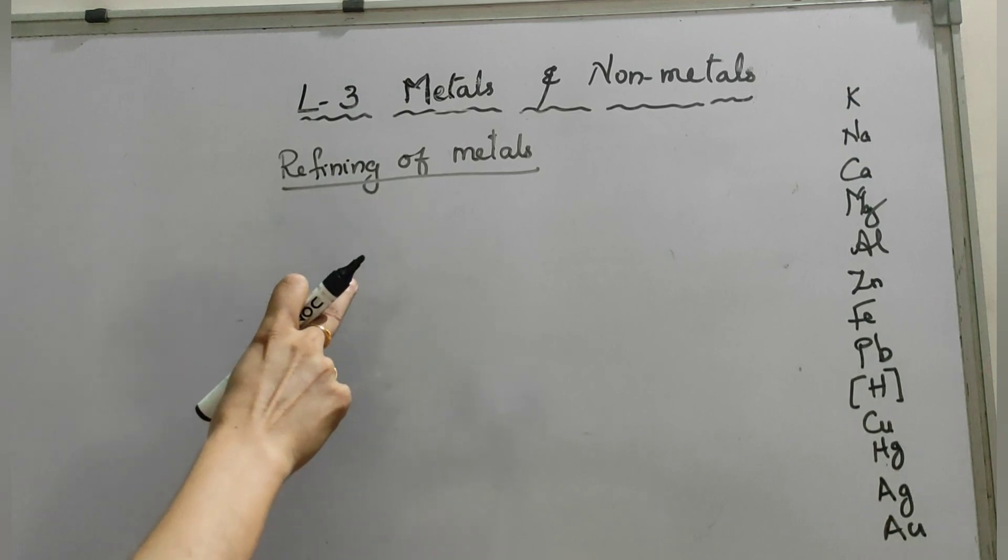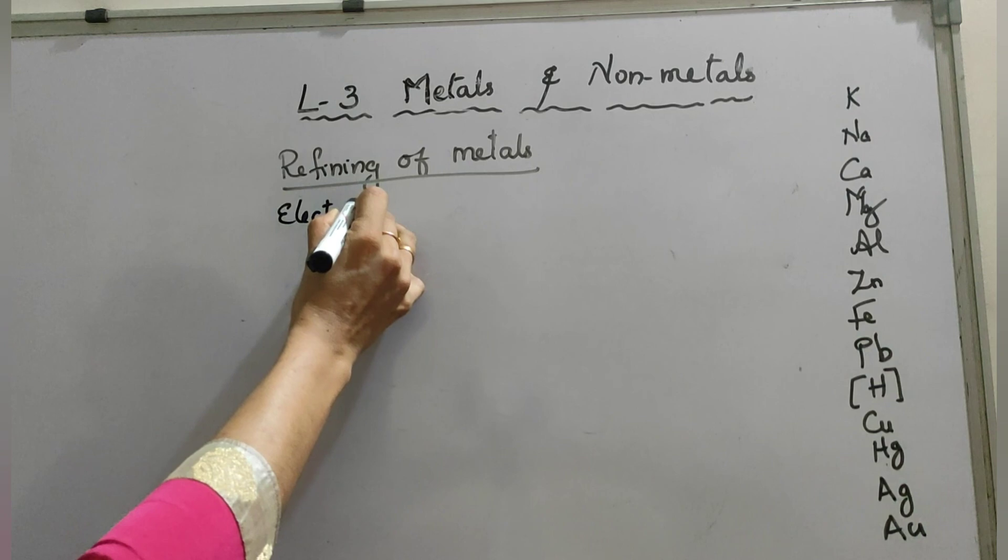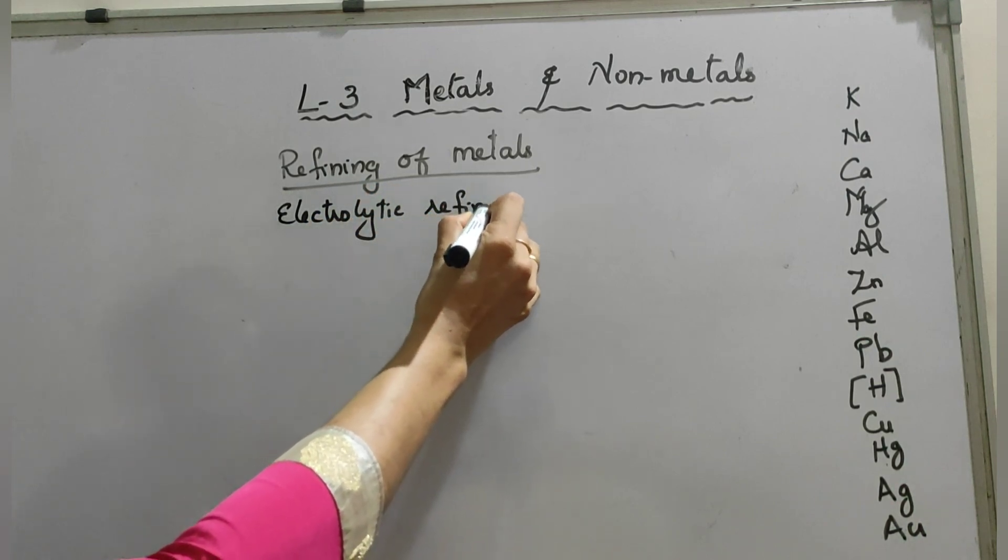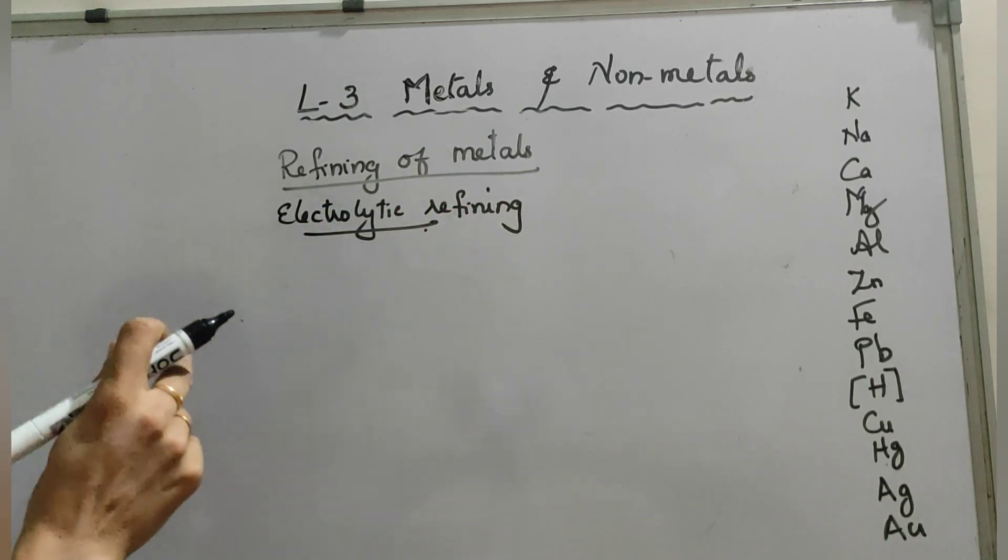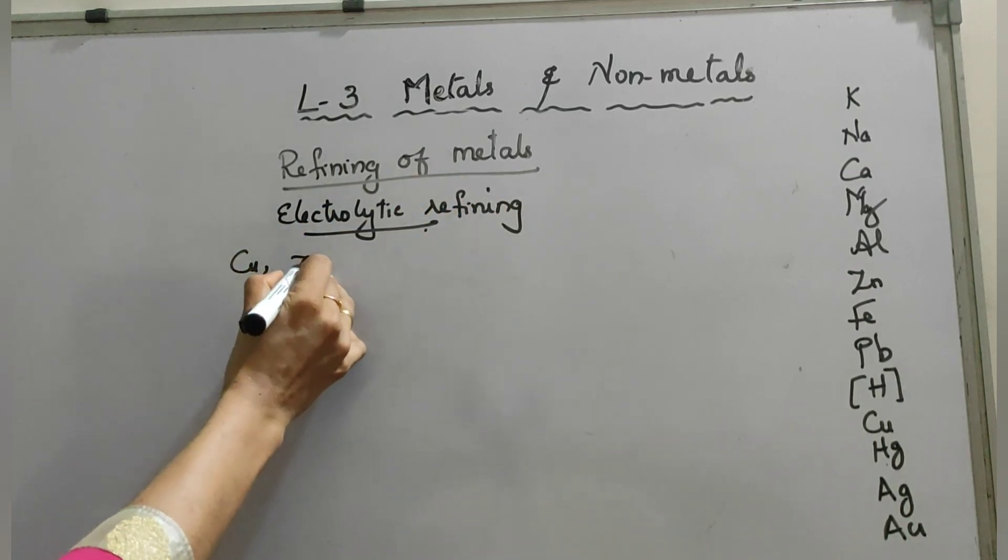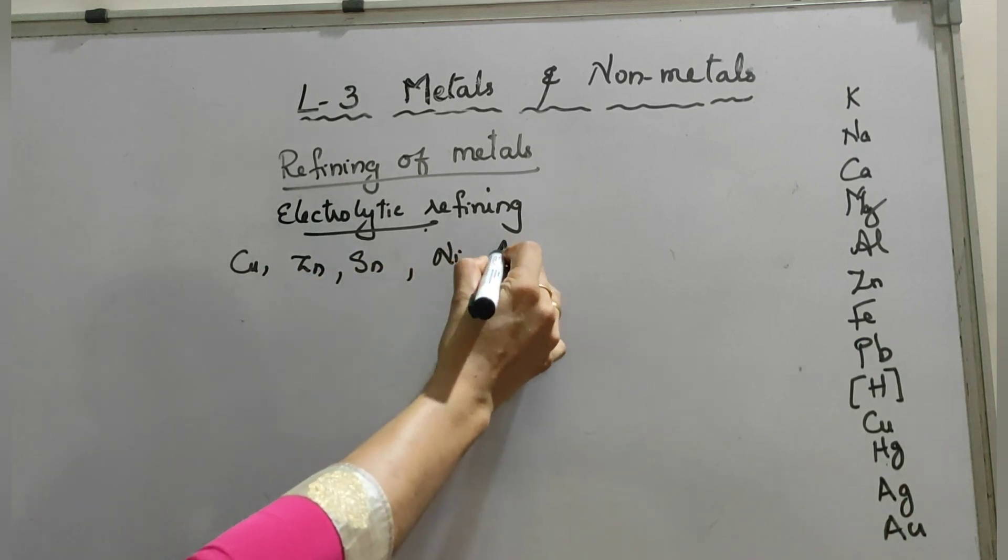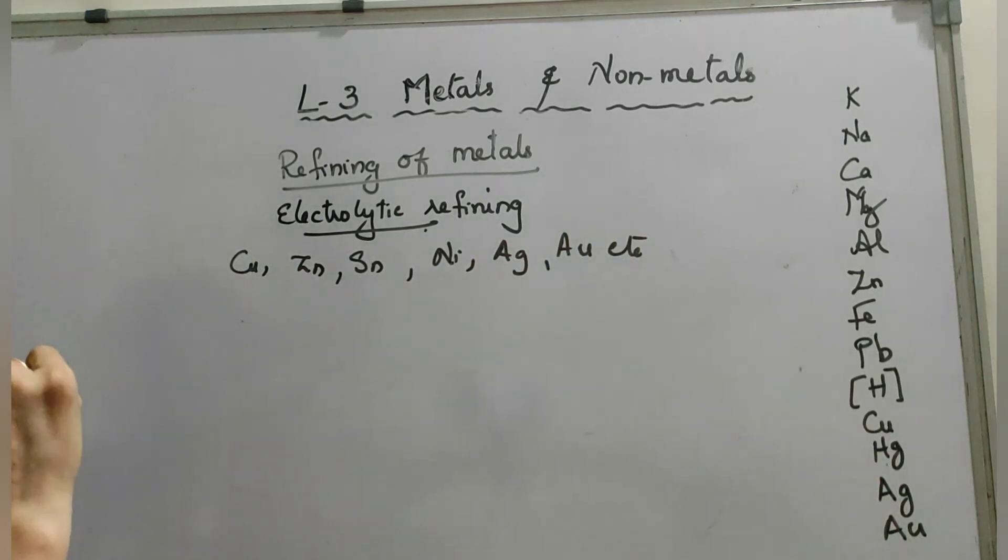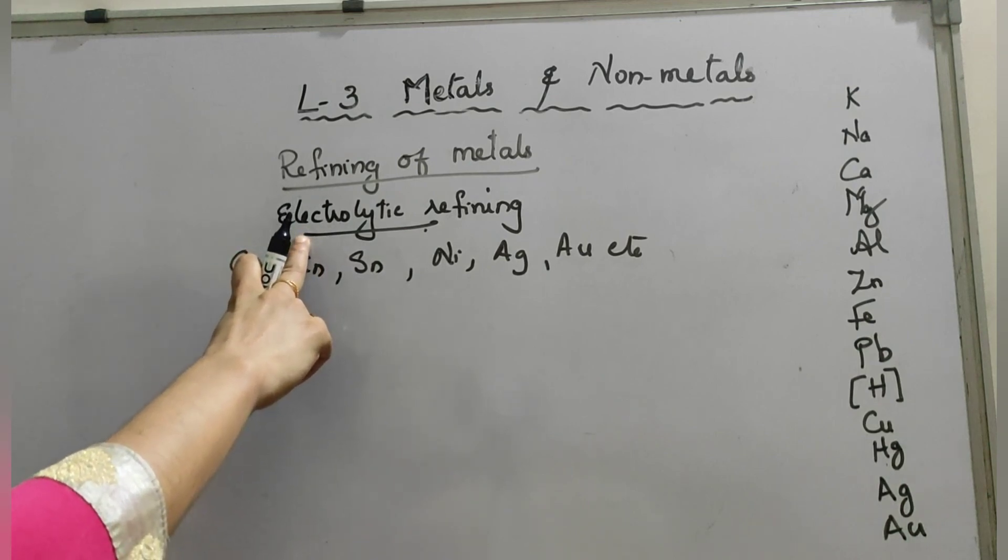That is electrolytic refining. Metals such as copper, zinc, tin, nickel, silver, gold, etc. are refined electrolytically. In this electrolytic refining process...